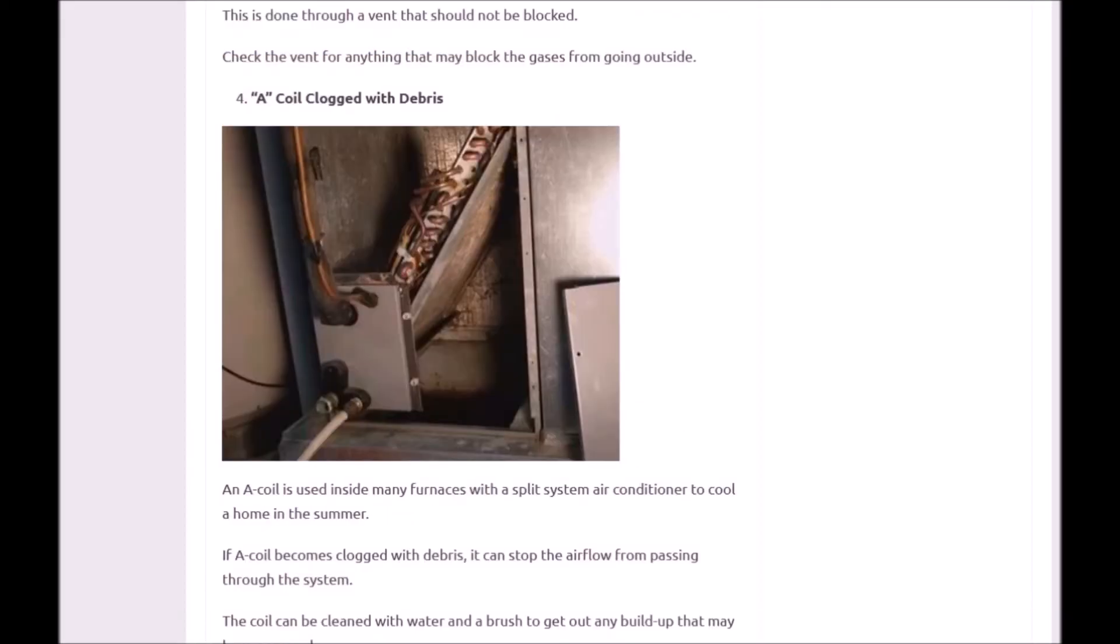Next up would be the A coils. Not all furnaces have this—it's for split system air conditioning, which is pretty common. Inside the bottom of the furnace sits an A coil and the air blows past this. During the summer, this is what cools many homes. Quite commonly, this becomes clogged if the filter hasn't been changed regularly or somebody's running it without the filter for some reason. This can block airflow from coming into the home.